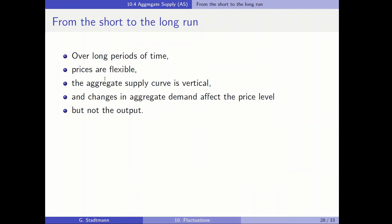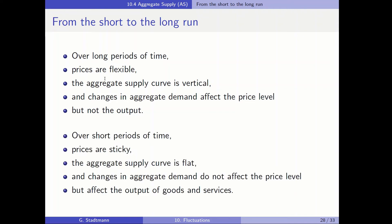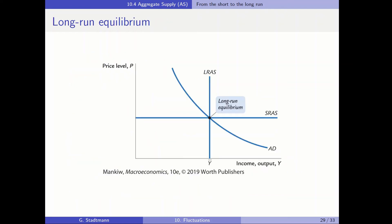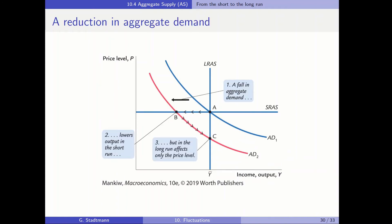Let's combine the short run and the long run. Over a longer period of time, prices are flexible, the aggregate supply curve is vertical, and changes in aggregate demand affect the price level but not output. Over short periods of time, prices are sticky, the aggregate supply curve is flat, and changes in aggregate demand do not affect the price level but do affect the quantity of goods and services produced. In this graph, we have a combination of the short-run and long-run versions of the model: the horizontal aggregate supply curve is valid in the short run, and the vertical aggregate supply curve is valid in the long run.